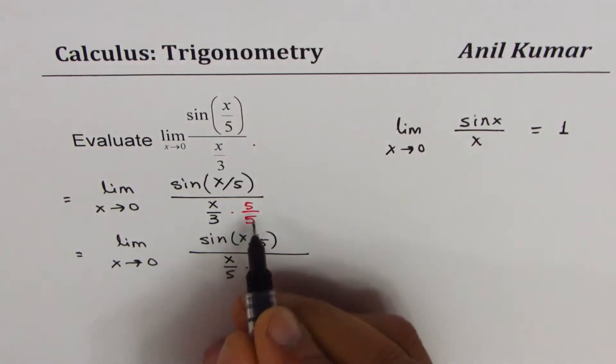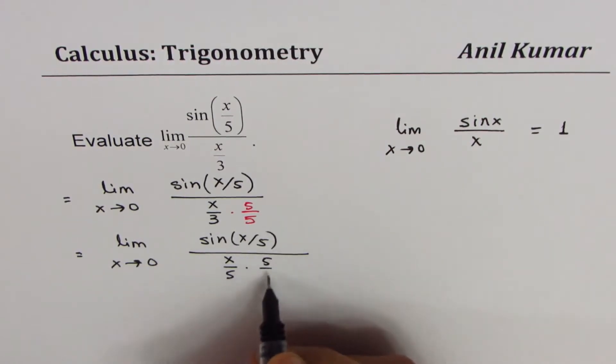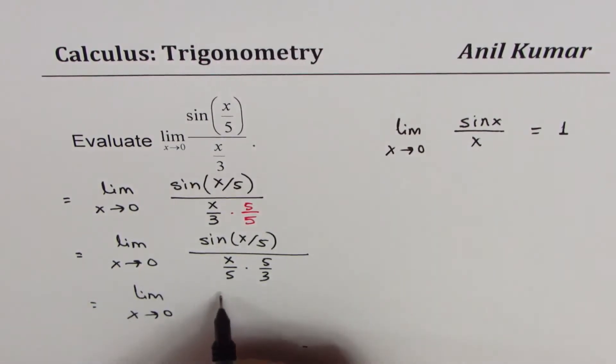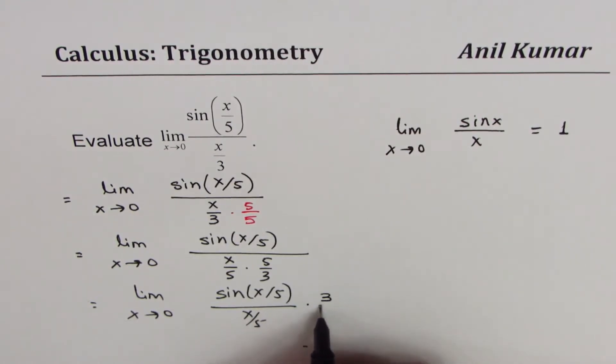So this is limit as x approaches 0 of sin(x/5) over x/5, and then divided by 5/3, which is the same as multiplying by 3/5.